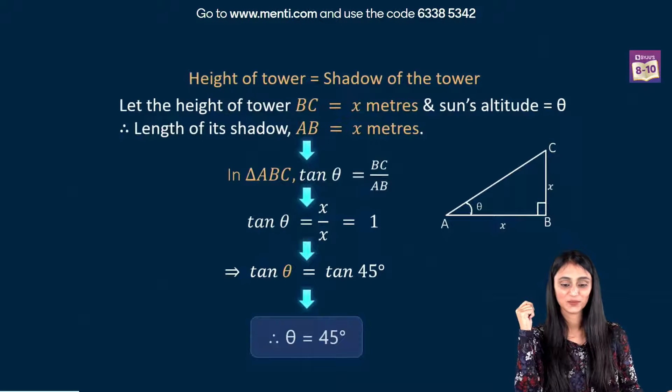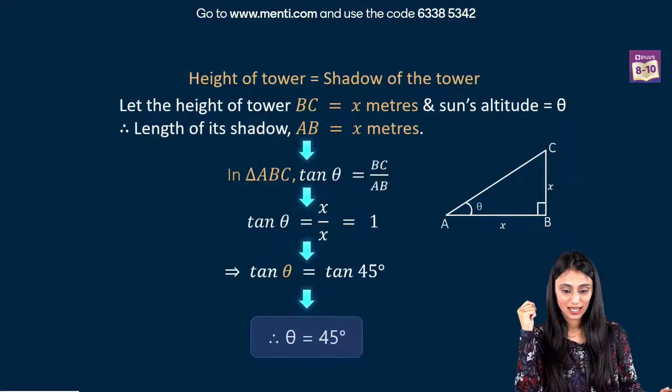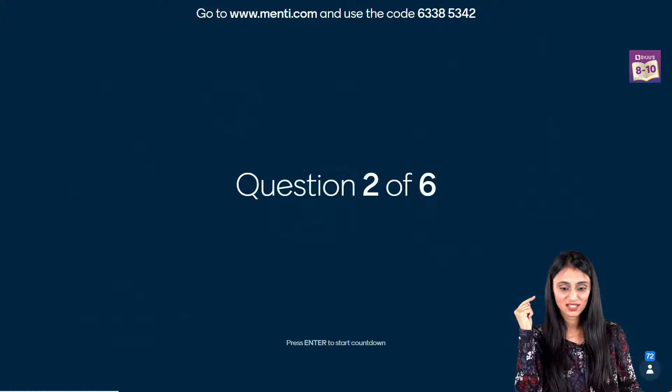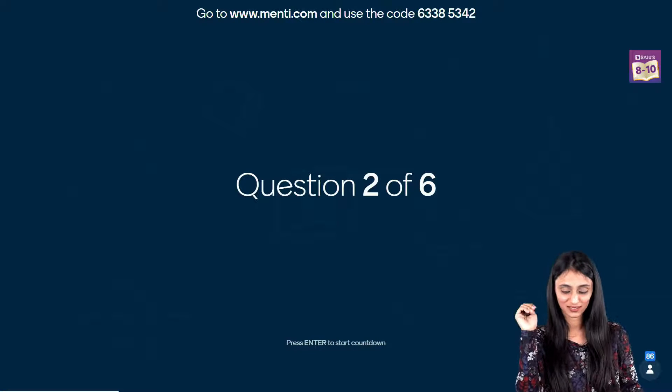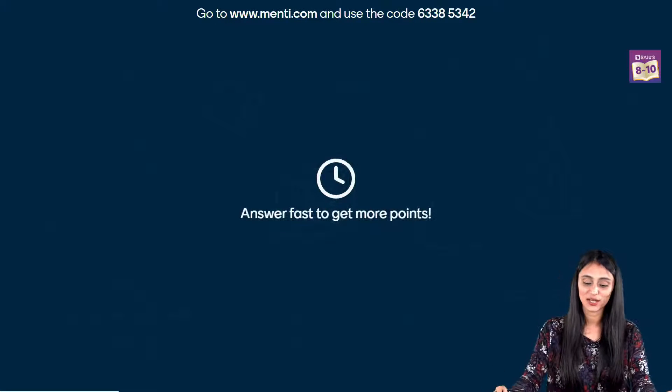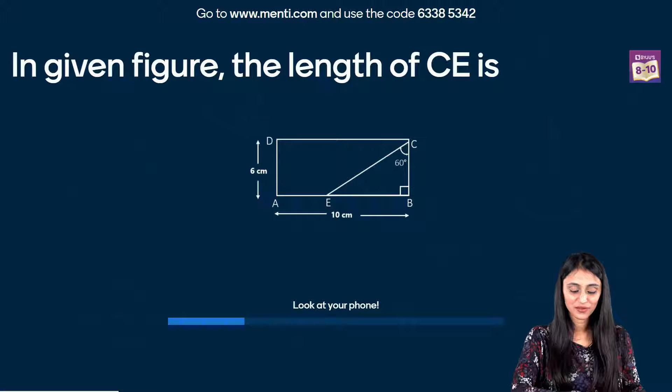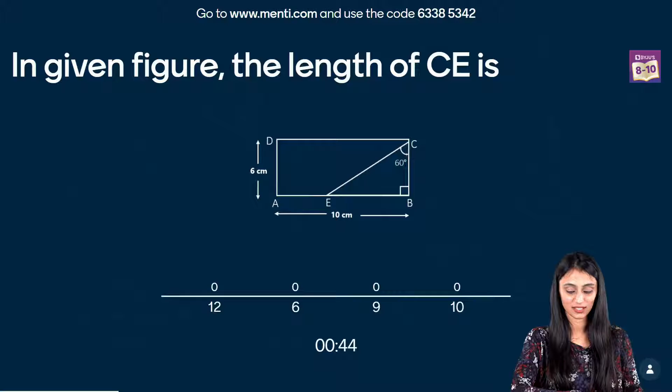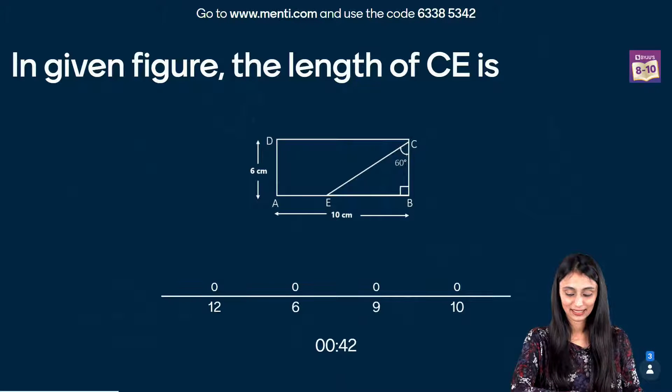Rishabh, 6 seconds. Wow. Nice speed. Alright. Let's take a look at the next question. Pragya misclicked. Oh, that's okay. Don't be disheartened. It's fine. Let's take a look at the second question now. In figure, the length of CE is? Very simple question. Right? And we did a question like this in the session also today. Right?